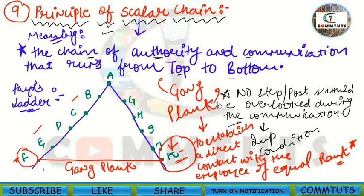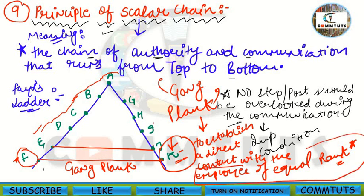This means that only those employees who are at the same level — equal rank — can contact each other directly. Similarly, if employee E needs to talk to employee J, they can directly contact each other via gangplank without going through all the intermediate posts. However, this is only for employees of equal rank. Gangplank is basically an exception to the Principle of Scalar Chain.